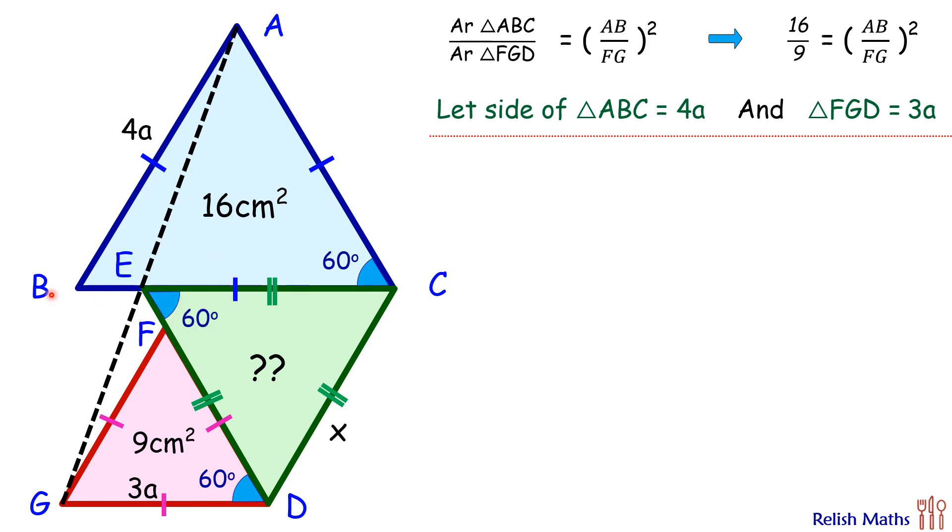Now for BC and GD, these angles are forming alternate interior angles, so we can say BC and GD are parallel to each other. And as they are parallel, thus the corresponding angle—this angle will be equal to this angle.